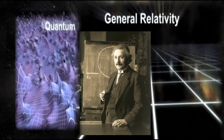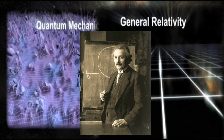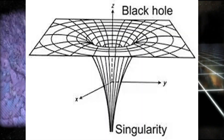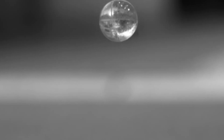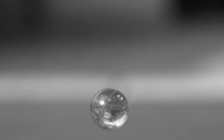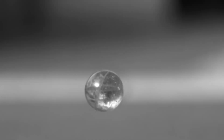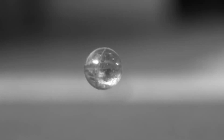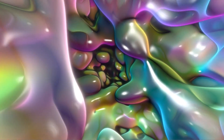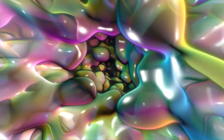Einstein taught us in general relativity that space and time can warp and curve, and that creates the force of gravity. The idea is if you examine space on smaller and smaller scales — not everyday scales, but tiny scales — the uncertainty gets bigger and bigger, and space and time become foam-like.